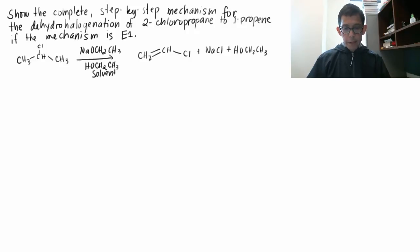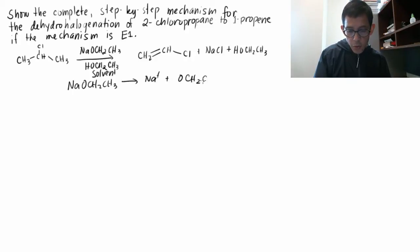Show the complete step-by-step mechanism for the dehydrohalogenation of 2-chloropropane to 1-propene if the mechanism is E1. Alright, so sodium methoxide, again, in solvent, dissociates into Na+ plus OCH2CH3-.